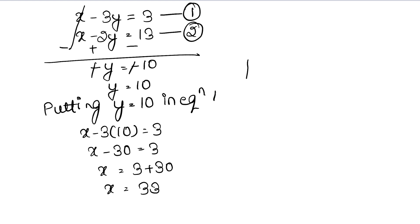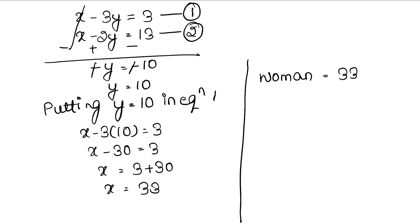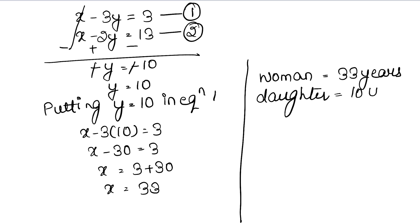So the woman's present age, which we took as x, is 33 years, and the daughter's age, which we took as y, is 10 years. This is the answer.